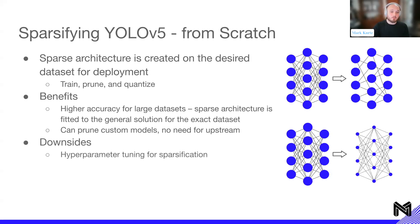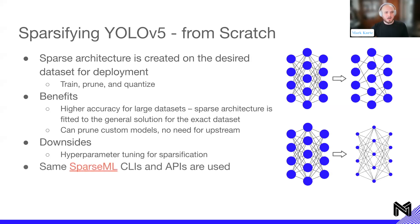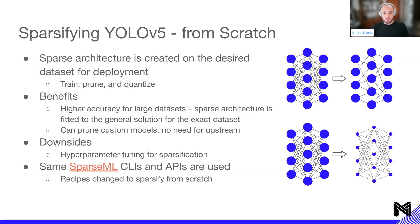The downside is there are sparsification hyperparameters to tune — figuring out what level of sparsity to target, which portions of the model to quantize, and so on. We're working on making this easier. The same SparseML CLIs and APIs are used to sparsify from scratch — the same sparseml.yolov5.train command, but you plug in your own custom recipe to prune and quantize. Recipes for sparsifying from scratch are all available on our SparseZoo, with links going out after.